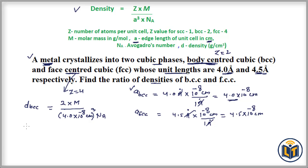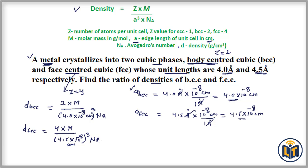In a similar manner, we write the density expression for FCC structures: density of FCC equals 4 (the number of atoms) multiplied by M (atomic mass), divided by a-cubed multiplied by N_A. Here, a for FCC is 4.5 multiplied by 10 to the power of minus 8 centimeters, cubed. M and N_A are the same as in the BCC expression.